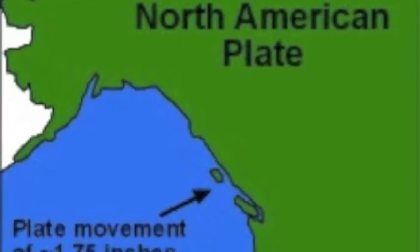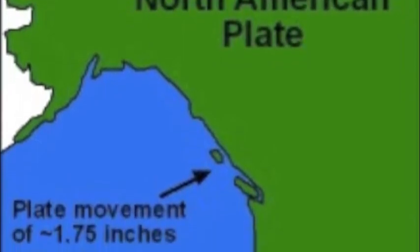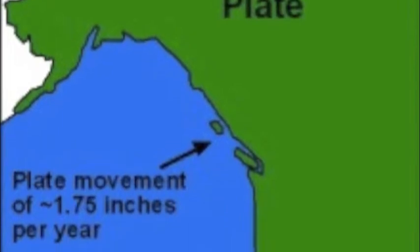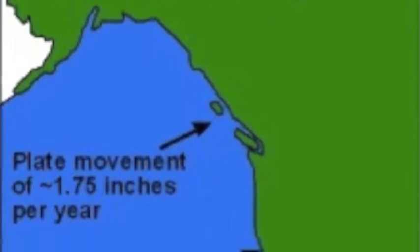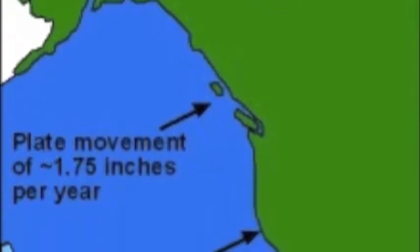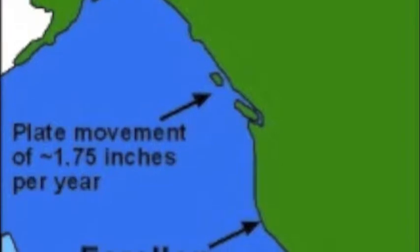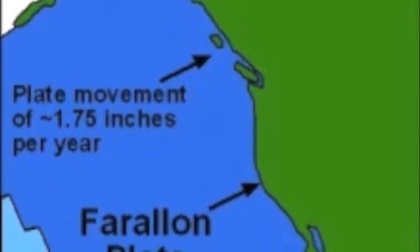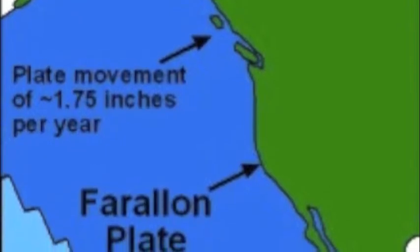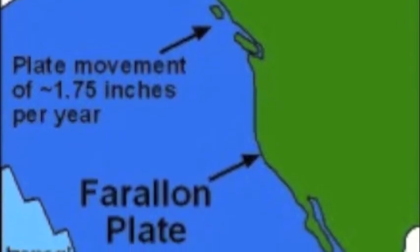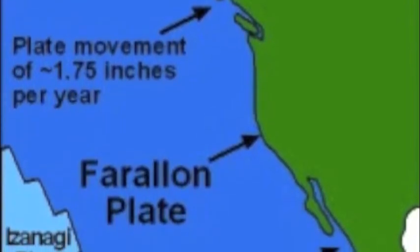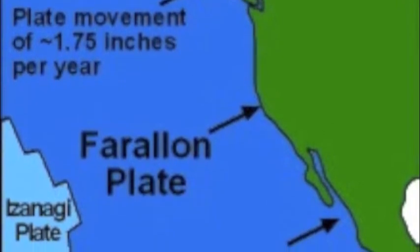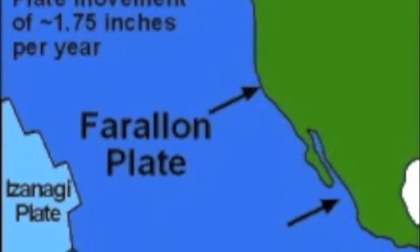The Farallon plate was an ancient oceanic plate which began to subduct under the North American plate, forming the Rocky Mountains that we see today. The oceanic crust that was subducted underneath the lithosphere was eroded away during the heat and pressure of this compression. We can still find slabs of this oceanic crust of the Farallon plate in sections of Utah, Idaho, and Colorado.